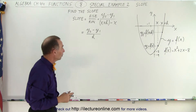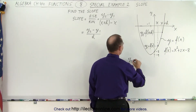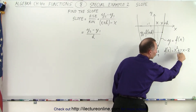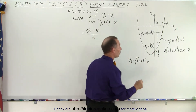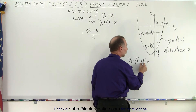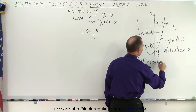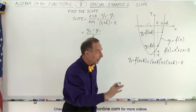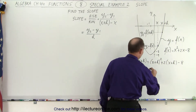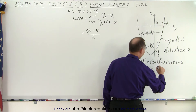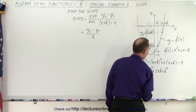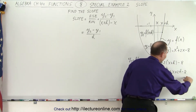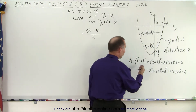What are y2 and y1? Remember that y2 was equal to the function evaluated at x plus h. The function in question is x squared plus 2x minus 8, which means we replace every x by x plus h. So this becomes x plus h squared plus 2 times x plus h minus 8. Multiplying that out: the first term squared plus twice the product plus the last term squared, plus 2x plus 2h minus 8. So this is the function evaluated at the arbitrary point x plus h.